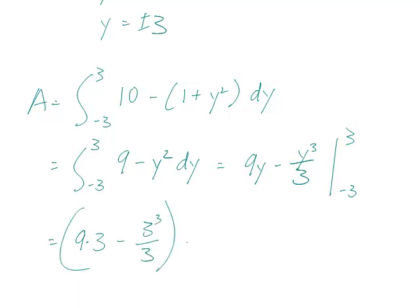from minus 3 to 3. So, that would be 9 times 3, minus 3 cubed over 3, minus 9 times minus 3, minus 3 cubed over 3, or minus 3 cubed over 3, but minus 3 cubed is the same thing as minus of 3 cubed. So, I just took that minus sign there and changed it to a plus sign.